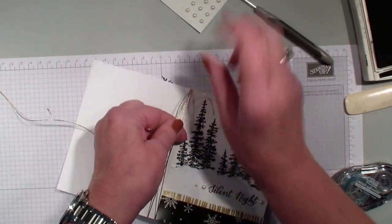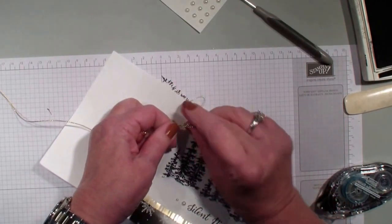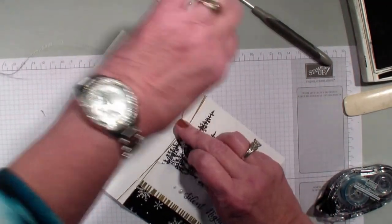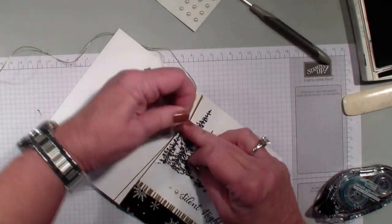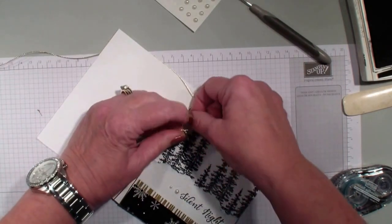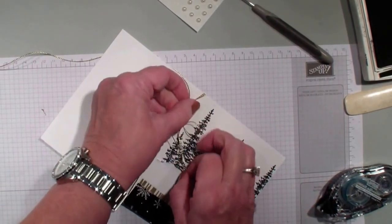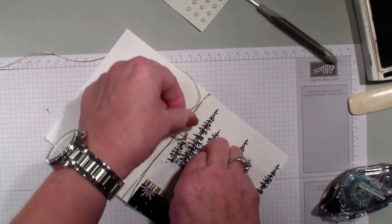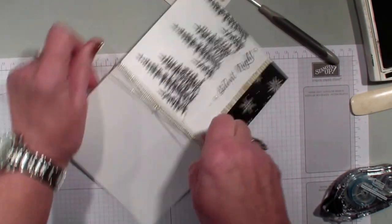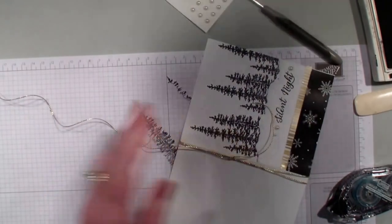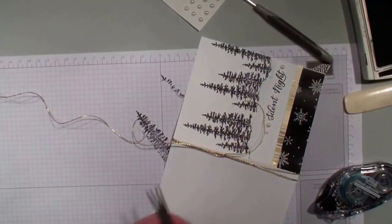I'm just going to tie a square knot. This cording is very pliable, very nice to work with. Bring in my snips. Trim that off.